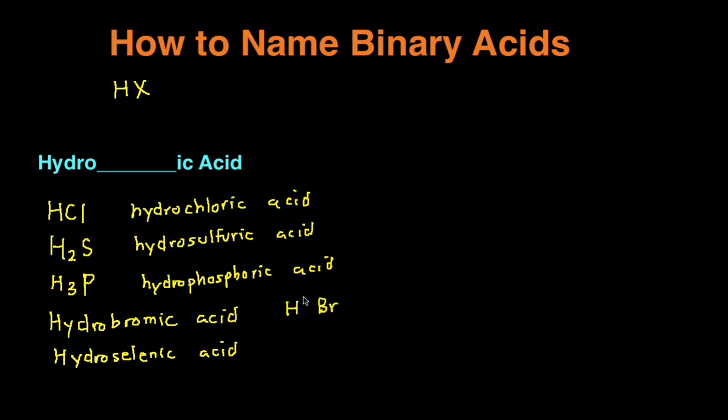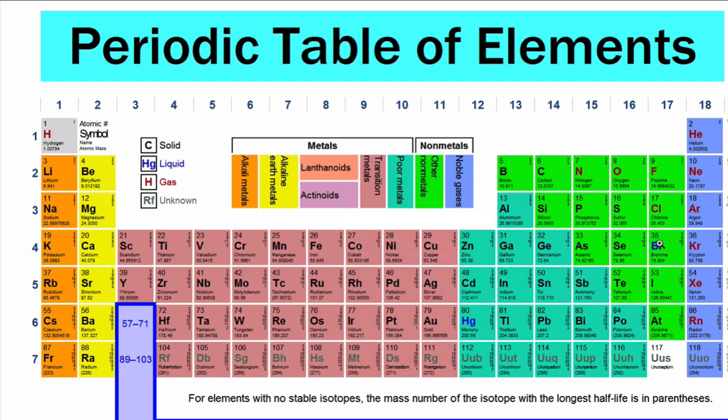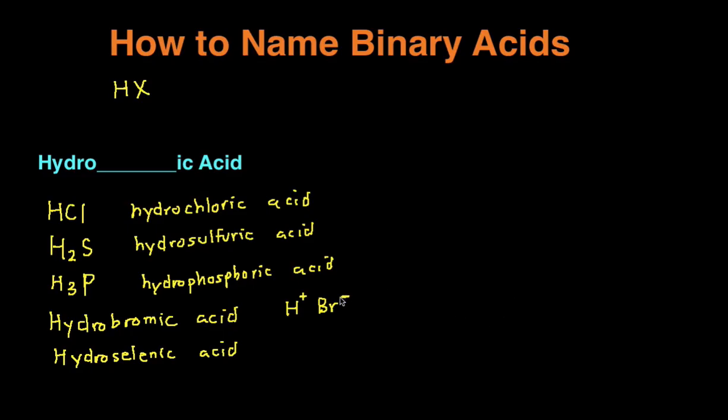And then we're going to write the charges. H, because it's in the first column, is going to be a positive one charge. And then Br, because it's in this column right here, it's halogen, it's going to be negative one charge. Then we check if the charges cancel out. Plus one, negative one do cancel out. So then it's just HBr.